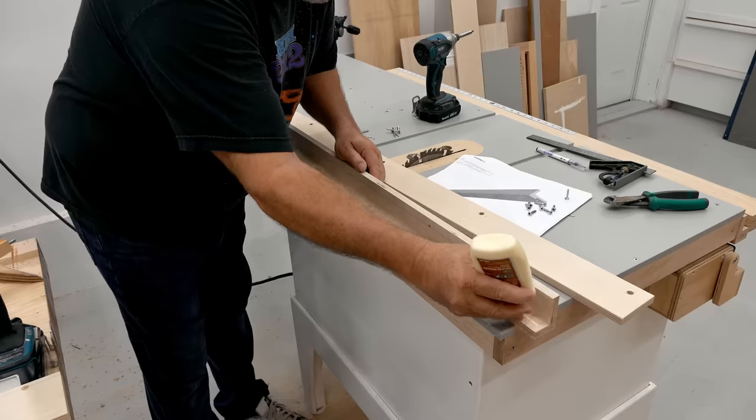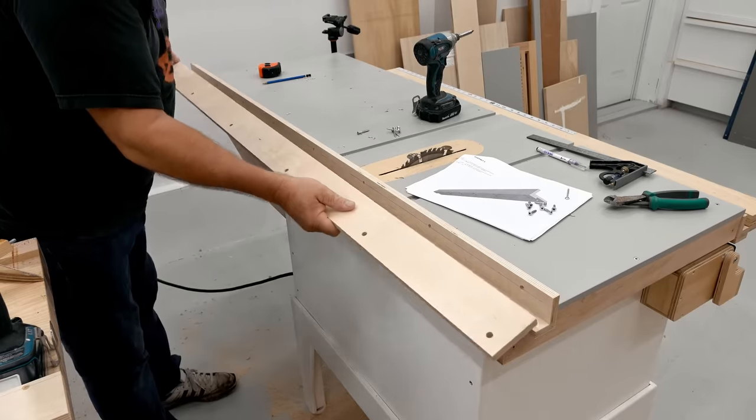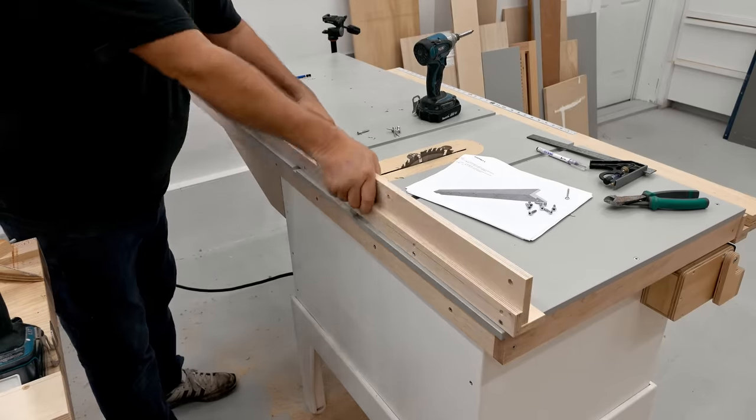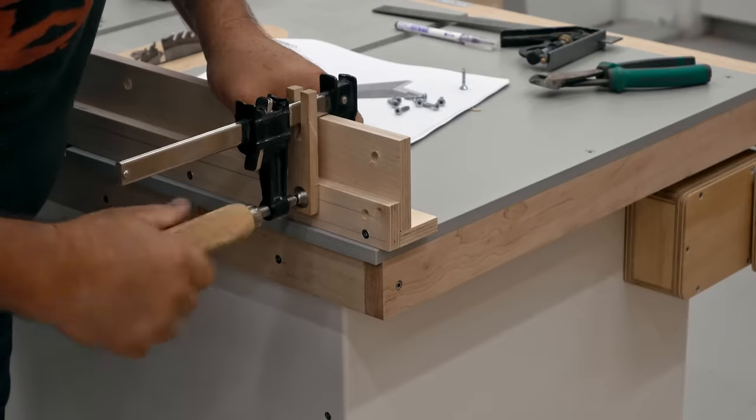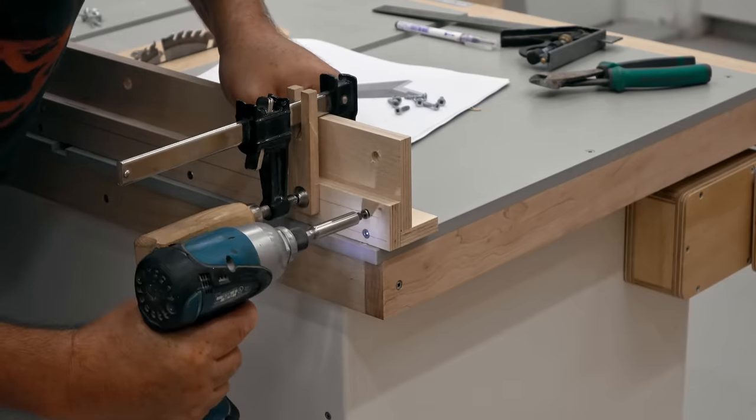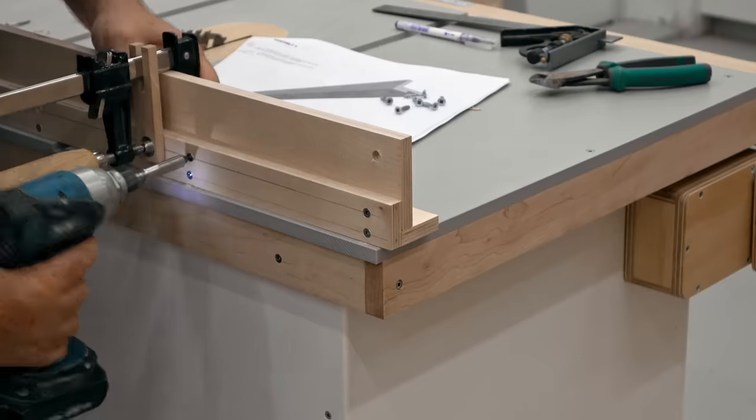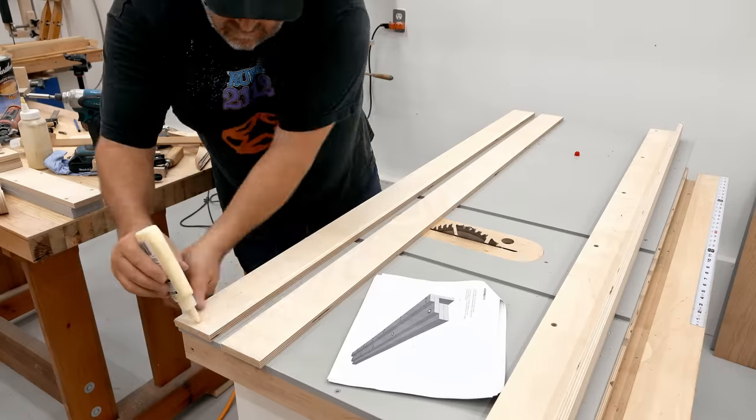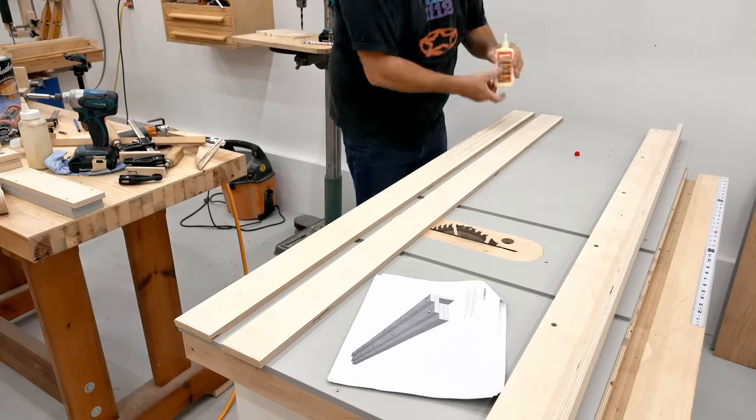The one inch screws that I have are a little bit too long for two layers of plywood, so I'm just clipping the tip off. The other main assembly is the fence rail itself. That's two layers of half inch plywood glued together.